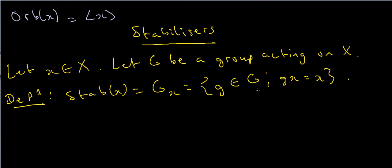Now one element that you know for sure will stabilize x is the identity element. You apply the identity element to x, it does nothing and you get x back. So what does this mean in the context of shapes and platonic solids? Does this have a physical meaning? Well yes.